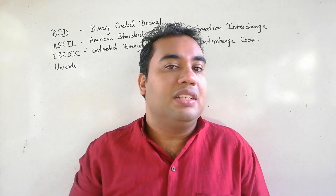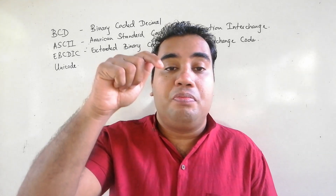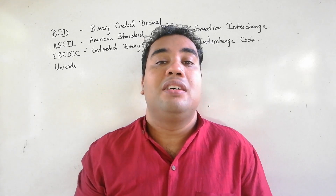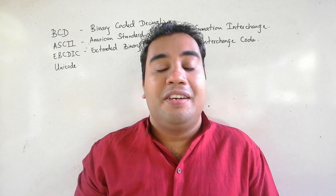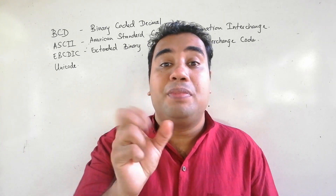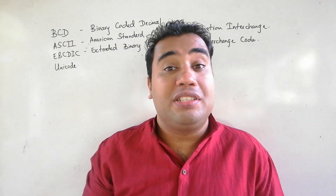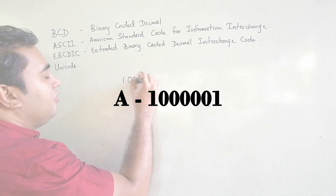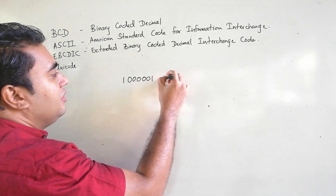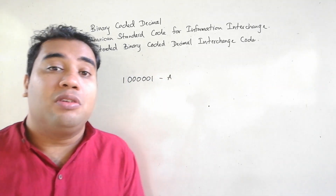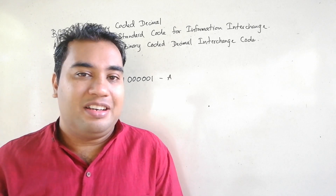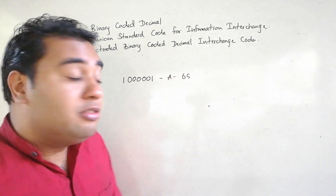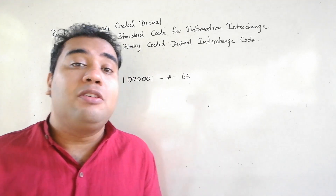Whatever character you enter, ASCII uses seven bits to represent it inside the computer. Simply when you type a document — let's say you are typing a Word document — and you press capital A, the computer sees that character as a seven-bit value. ASCII defines how each character is represented, so capital A will be represented as a specific seven-bit pattern.